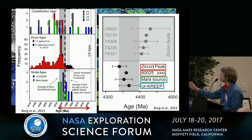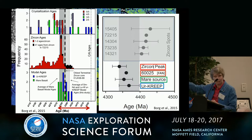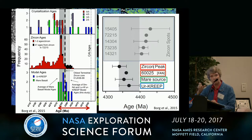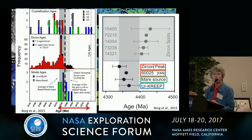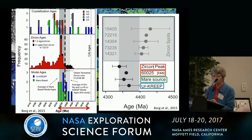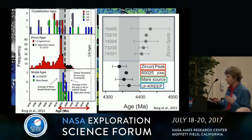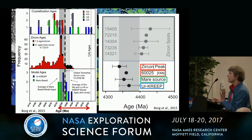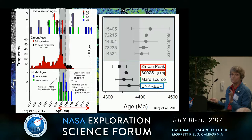They all sort of fall in — and this is Lars Borg's scrubbing of the issues — they all fall in this 4.35 zone. So there's an aspect of crustal evolution that's fundamental to all these different approaches to what happened in these early stages.